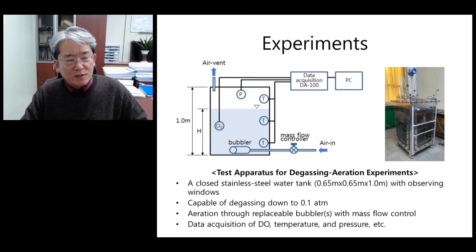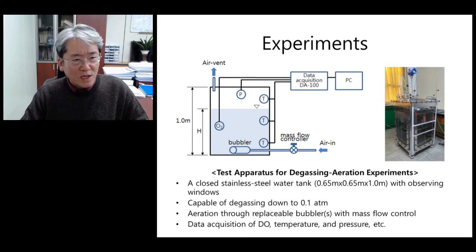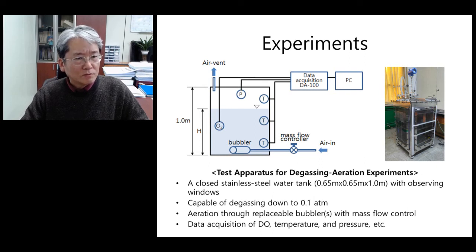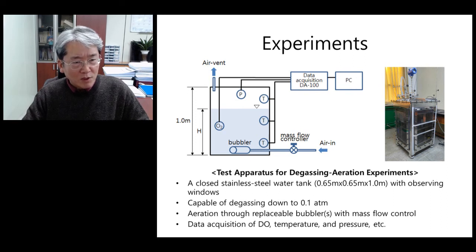For the experimental study, we designed a unique experimental setup featuring the capacity for cyclic degassing and aeration. The stainless steel cased water tank is sealed down to less than 0.1 atm with absorbing windows, with which we could successfully conduct a series of bubbling performance tests. We first degassed the dissolved gas by lowering the head pressure down to 0.1 atm, providing a lower DO level of 2.0 mg per liter or less, then provided air through a commercial double bubbler for aeration.